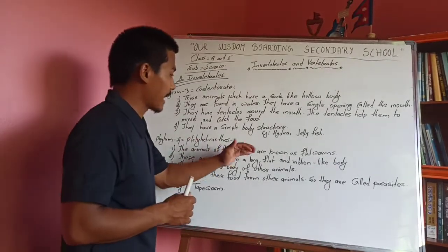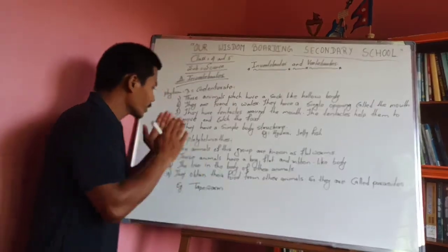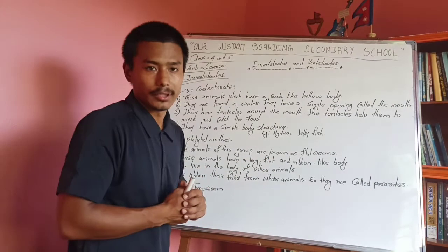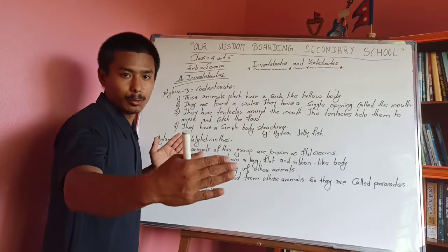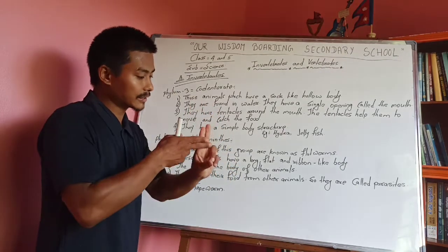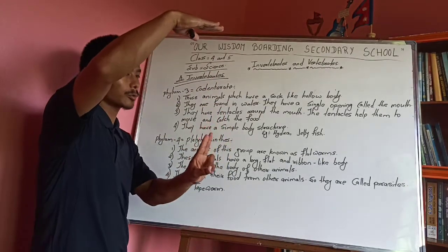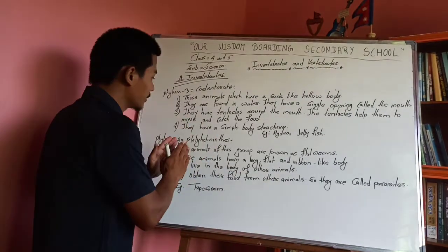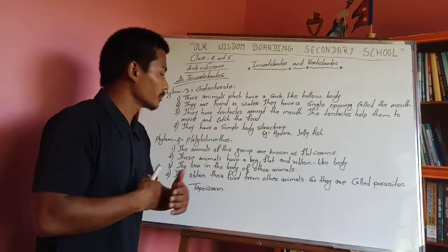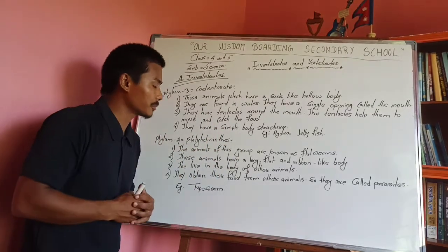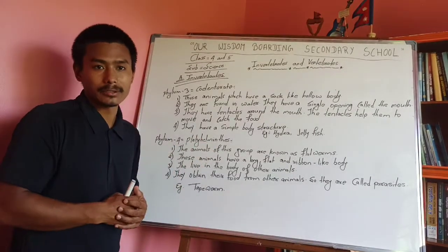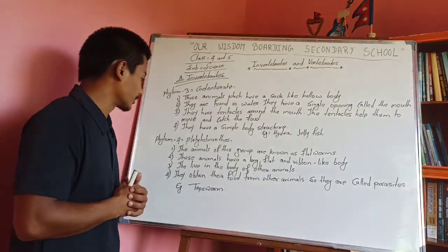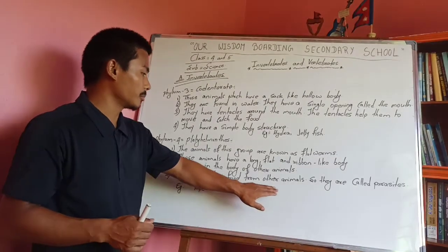Phylum 4 is Platyhelminthes. These animals have a long, flat and ribbon-like body. They live in the body of other animals and obtain their food from other animals. So they are called parasites.